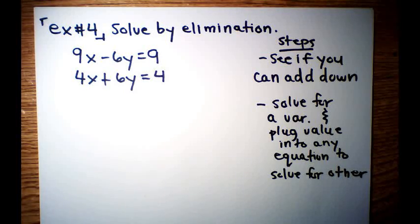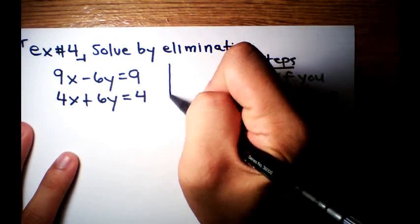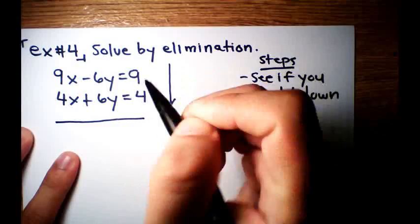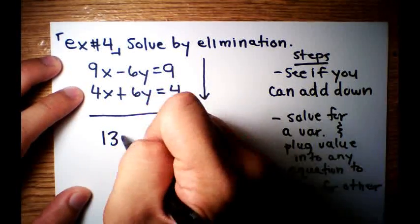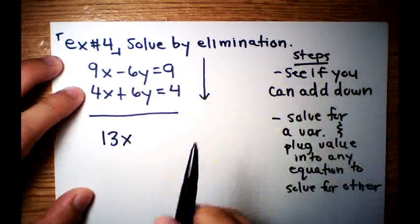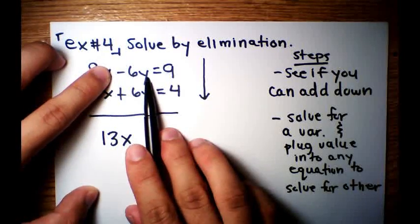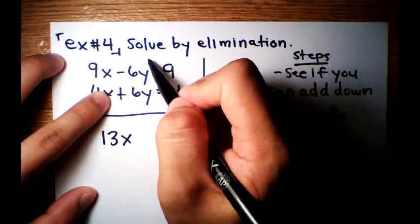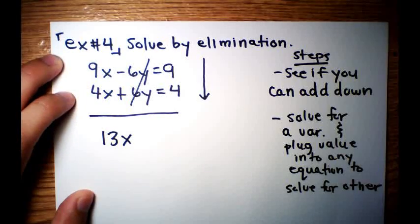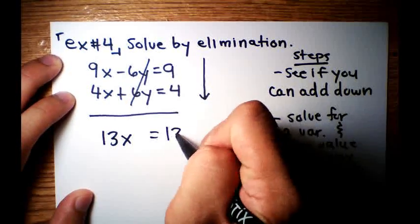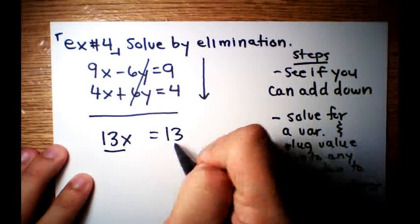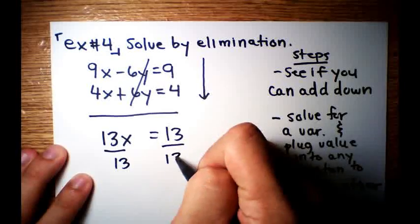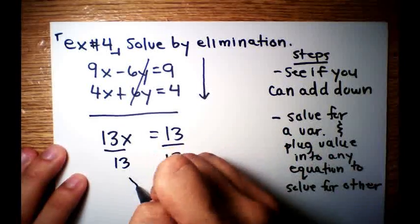In this case, yes we can. So this is what I mean by adding down. If we add downwards like this, 9x plus 4x is going to be 13x. And if we add down, negative 6y plus 6y, it already eliminates itself, and is equal to 13. So your first step is to always see if you can add down, because sometimes you can't. Now divide both sides by 13. x is equal to 1.